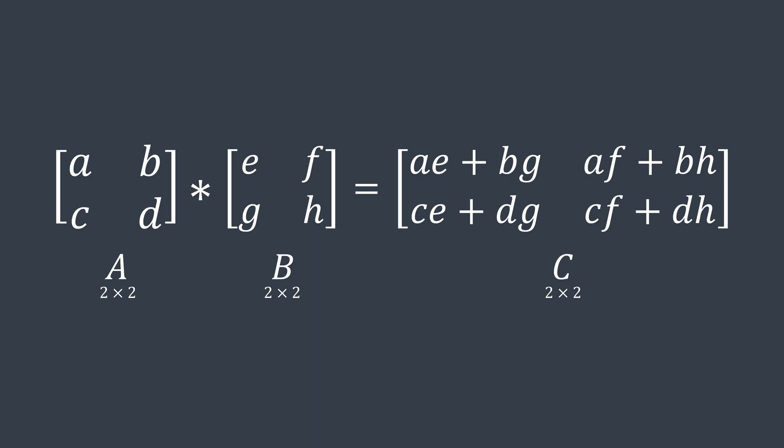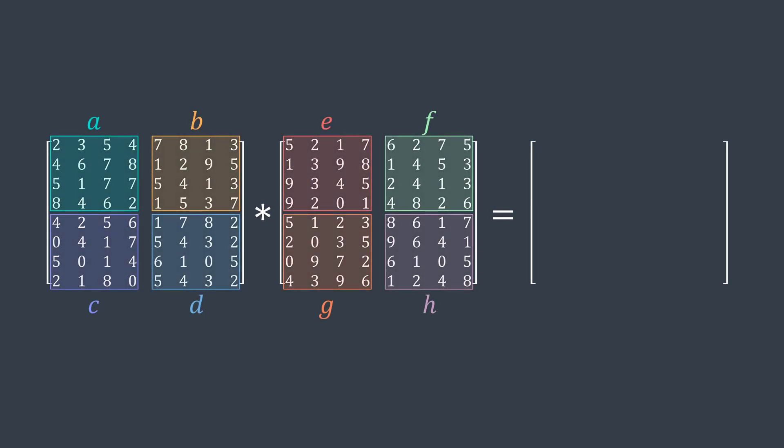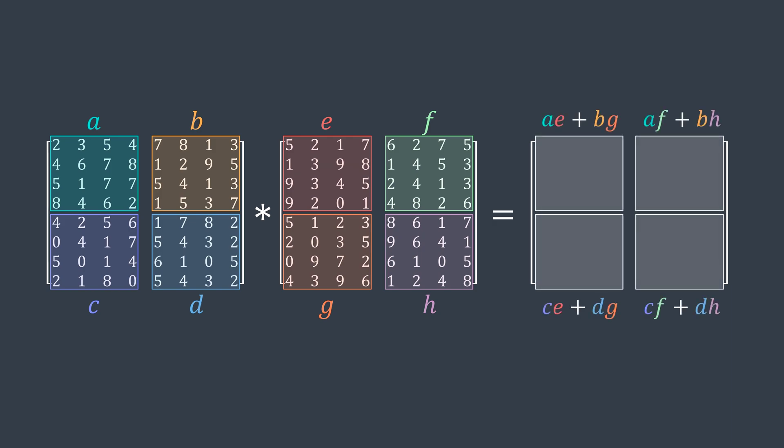What if I tell you that we can apply the same logic if A, B, C, D, E, F, G, and H were matrices? Imagine that we want to multiply these two 8 by 8 matrices. We split them into four parts, A, B, C, D for the first one and E, F, G, H for the second one. And now we just calculate AE plus BG, AF plus BH, CE plus DG, CF plus DH, and we merge them into one matrix. It represents the product of A uppercase and B uppercase.